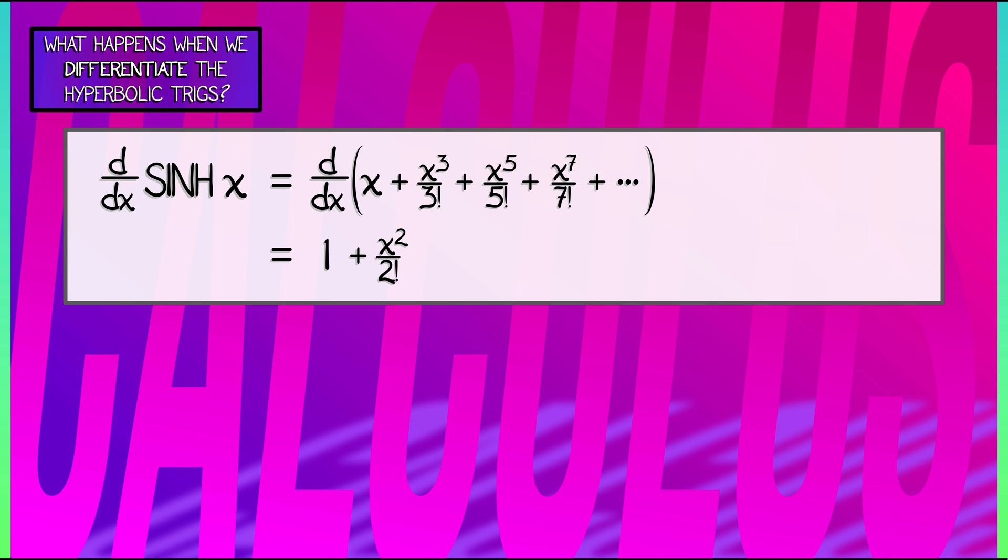The derivative of x to the fifth, that's 5x to the fourth. The 5 cancels with the 5 factorial below, we get x to the fourth over 4 factorial. Then x to the sixth over 6 factorial. Keep going.